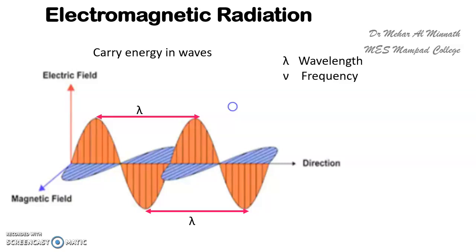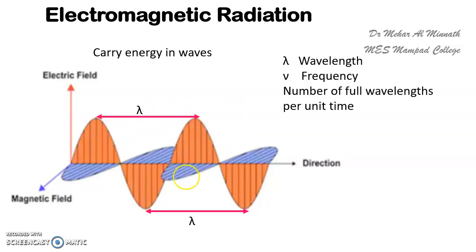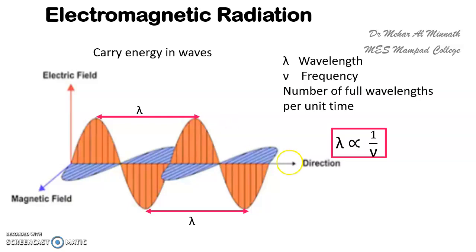We have another term: frequency, designated as nu (ν). Frequency is the number of full wavelengths per unit time — how many such waves are formed per unit time. If lambda is large, the frequency will be small, and if lambda is small, the frequency will be large. So lambda and frequency are inversely proportional to each other. The product of lambda and frequency equals the velocity of the wave.